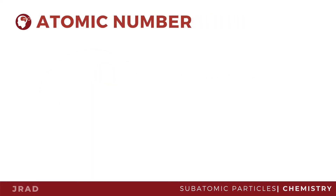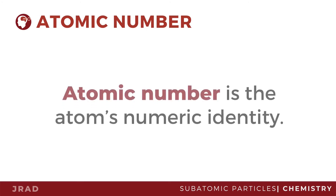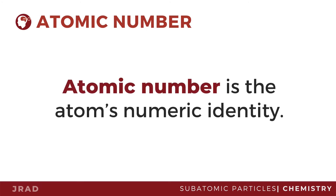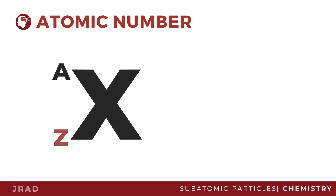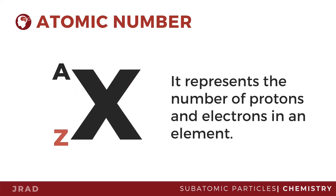Each element has a distinct number of protons, known as the atomic number, with the symbol Z. This unique number also represents the number of electrons in the same element, meaning all atoms of a given element have the same number of electrons and protons. No two elements have the same atomic number.